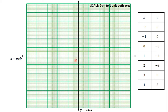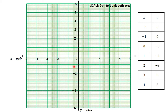This intersection point becomes our origin, numbered 0. Using the scale of 2 centimeters to 1 unit on the x-axis, the numbering goes: negative 1, negative 2, negative 3, negative 4, negative 5 on the left-hand side, and 1, 2, 3, 4, 5 on the right-hand side. On the y-axis, we have negative 1 through negative 6 going downward, and 1 through 6 going upward. We now have our x and y axes numbered nicely.